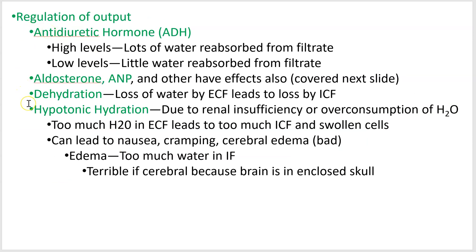Regulation of output is mostly through your kidneys via anti-diuretic hormone (ADH). When you produce and release a lot of ADH, you reabsorb water and produce concentrated urine — and not much of it. When you are not producing ADH, you're going to urinate more. So if you drink a lot of water, you cut back on ADH release and a lot of that water passes through you.